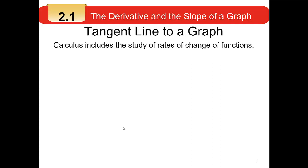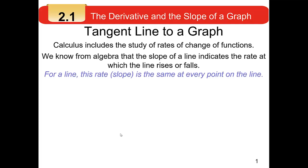Calculus typically includes the study of rates of change of functions — that's a big piece of calculus. We know from previous algebra courses that the slope of a line indicates the rate at which the line rises or falls. If a line has a steep slope, it's increasing rapidly; if it has a more moderate slope, it's not increasing as rapidly. With a line, this rate or slope is the same for every point on the line.